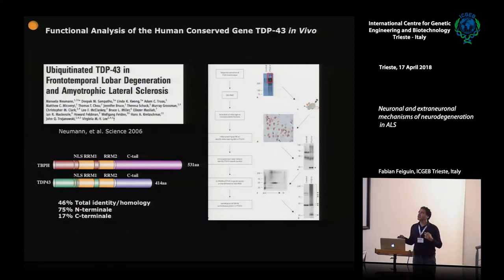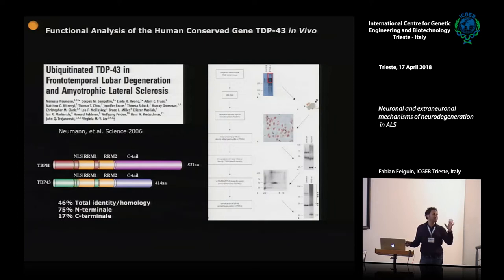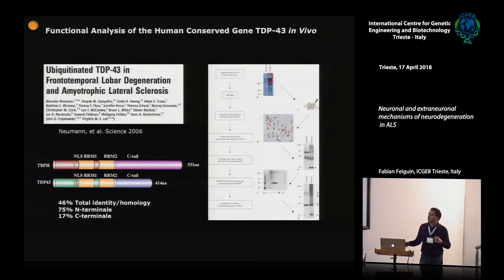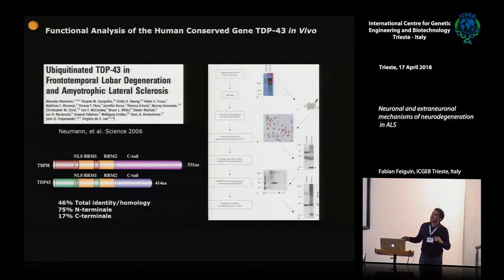TDP43 is the human protein. It presents two RNA binding domains and nuclear localization signals — it is an RNA binding protein. The Drosophila homolog, TBPH, is a longer protein at 53 kDa compared to 43 kDa, with an overall identity of 46%. But in the functional RNA binding region, the homology is 75%, which is almost identical. The most variable part is the C-terminal tail, so overall it's a very strong homology.